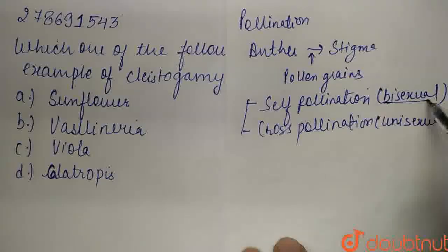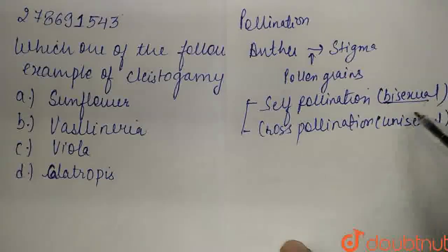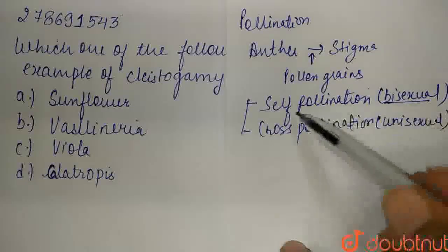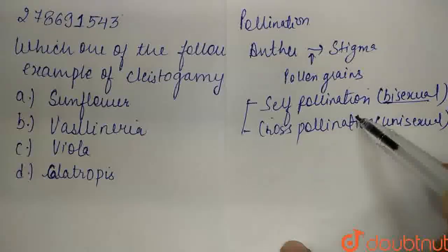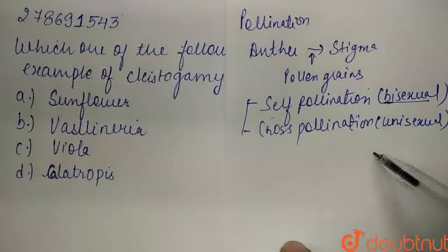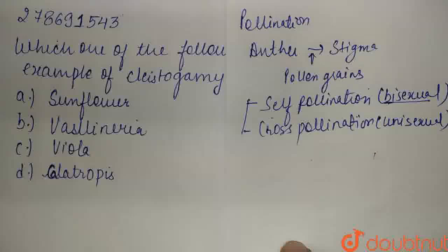So guys, see, if our flower is bisexual, okay, meaning it has both male and female reproductive parts, then both self-pollination and cross-pollination can occur. Because if pollen grain from another flower lands on its stigma, cross-pollination will occur. If pollen grain from the same flower reaches the stigma, then self-pollination will occur.